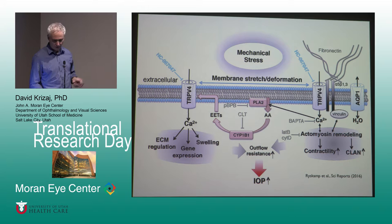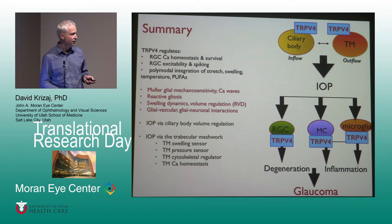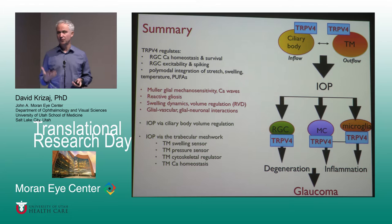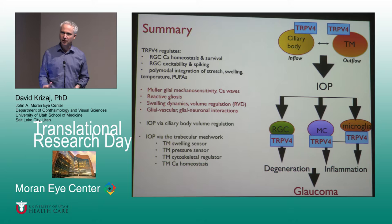To conclude: TRPV4 channels regulate IOP at both inflow and outflow levels, although the outflow component is probably more important. They also regulate the remodeling that happens during mechanical stress in glaucoma at the level of ganglion cells — the neurons and glia. Microglia also have these channels and are very stretch-sensitive. Combined, these events function to induce the phenotype that we call glaucoma.